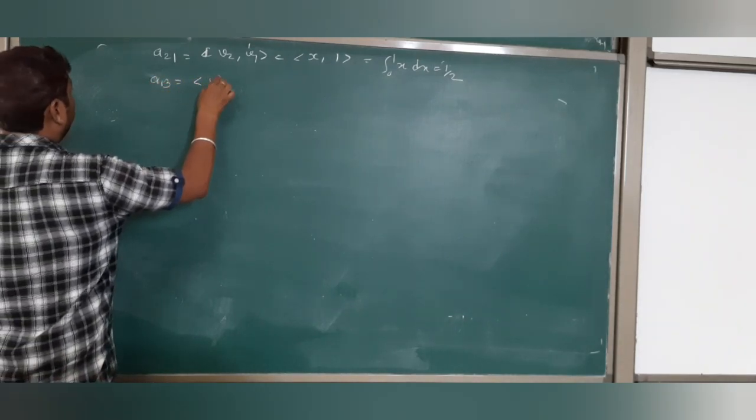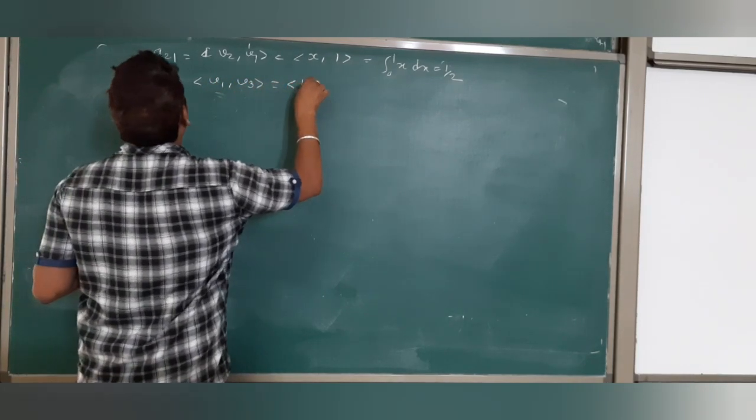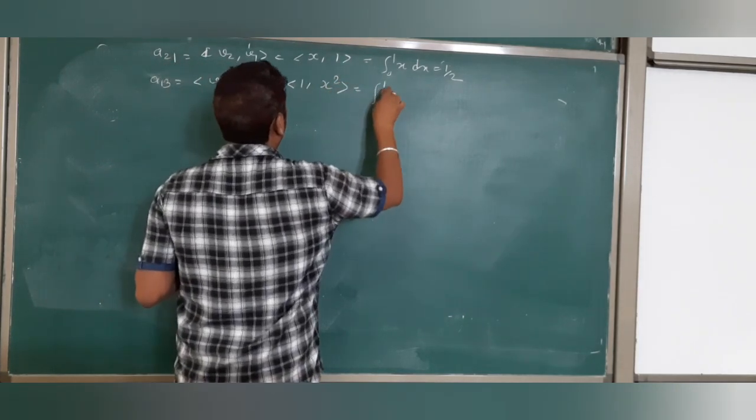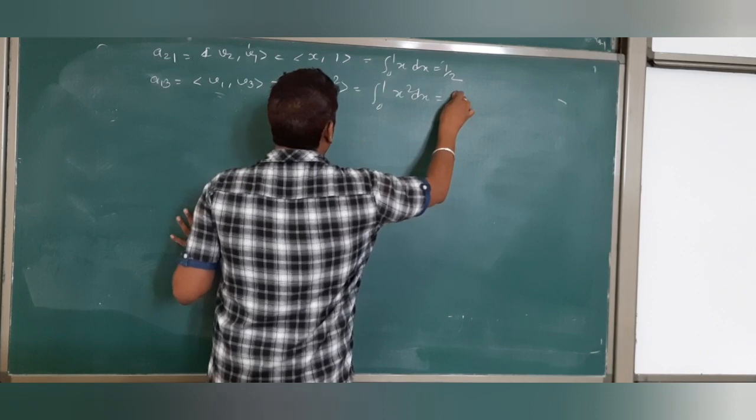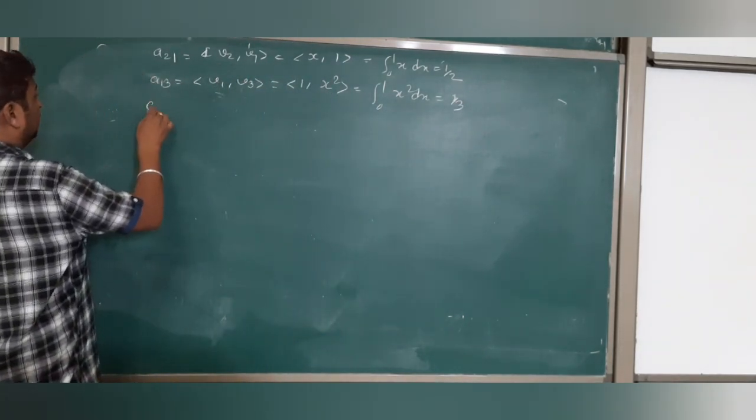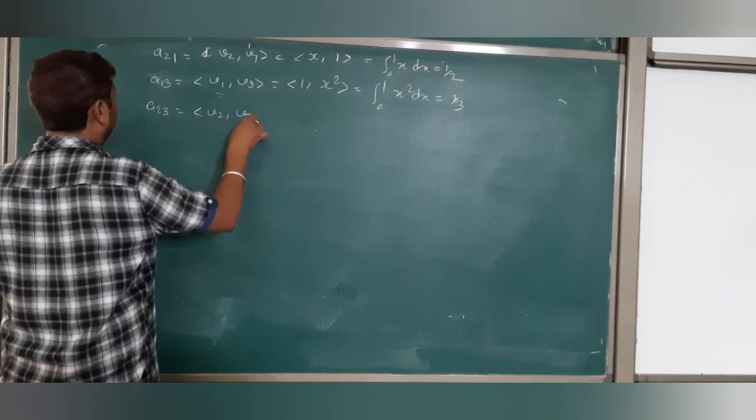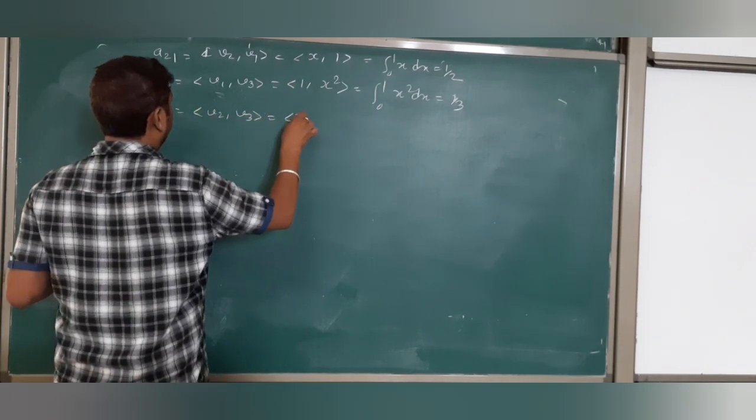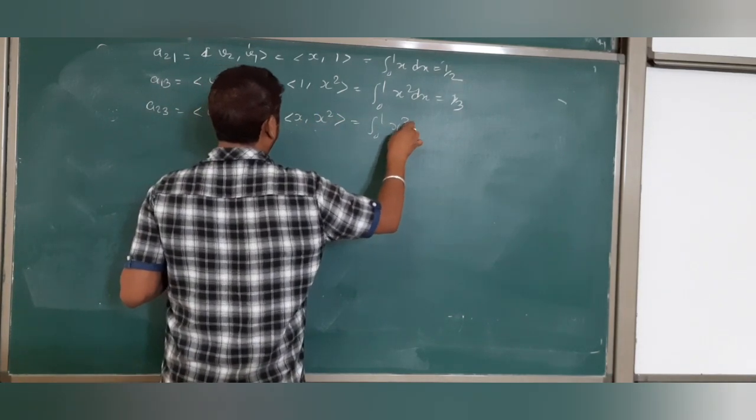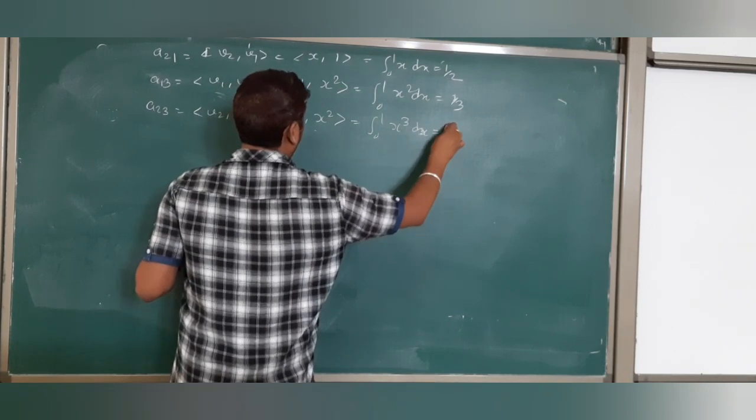a₁₃ is inner product v₁, v₃, which is 1 with x². The integral is 0 to 1 of x² dx, which equals 1/3. a₂₃ is inner product v₂, v₃, which is x with x². This is integral 0 to 1 of x³ dx, which equals 1/4. So a₂₃ equals a₃₂ equals 1/4.